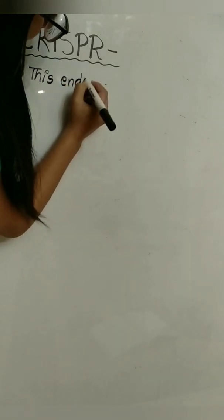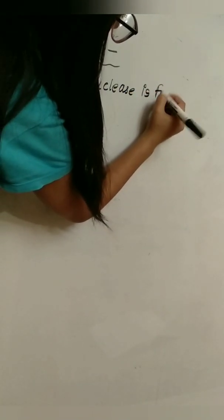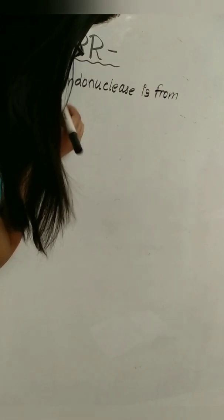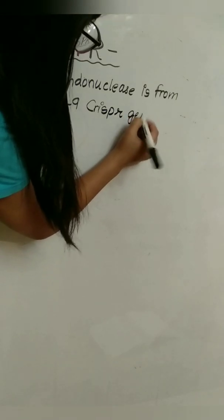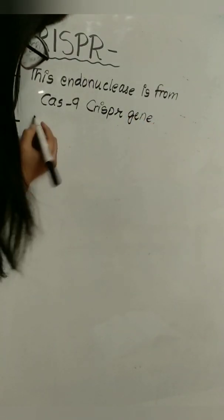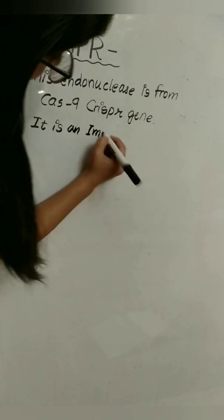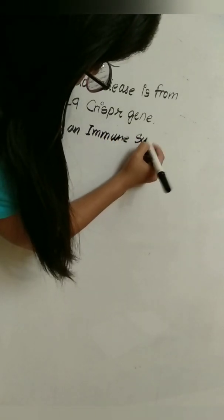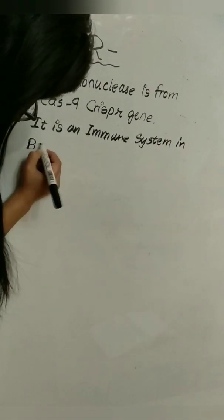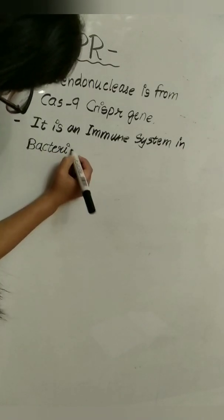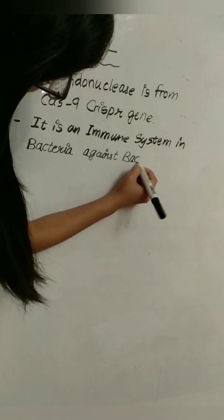This endonuclease is from the Cas9-CRISPR gene. And this technique works as an immune system in bacteria against viruses or bacteriophages.